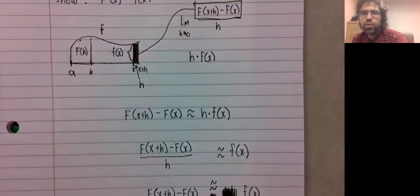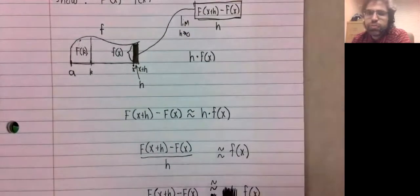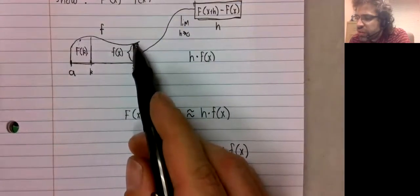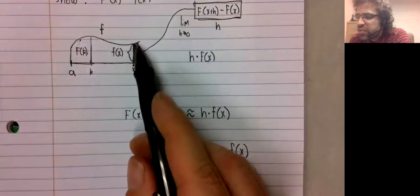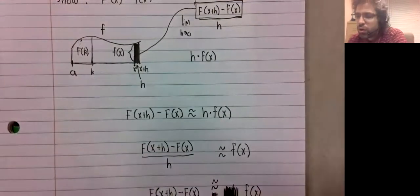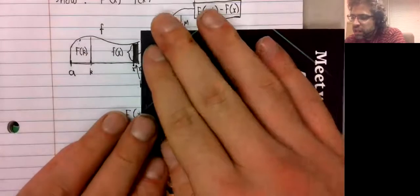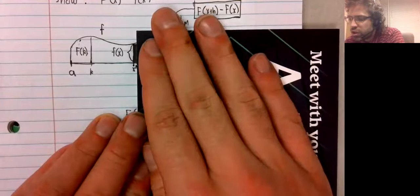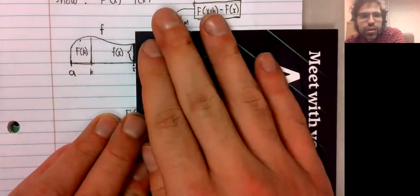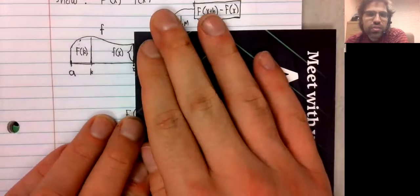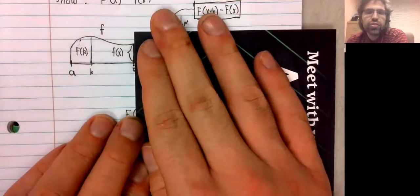The reason that this approximation isn't exact is this white sliver you see up here. Now as h gets closer and closer to 0, that white sliver gets smaller and smaller.